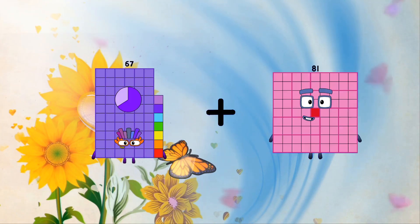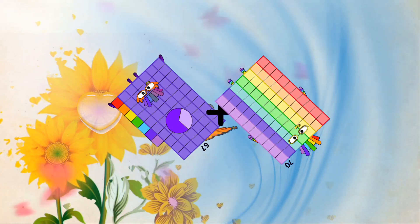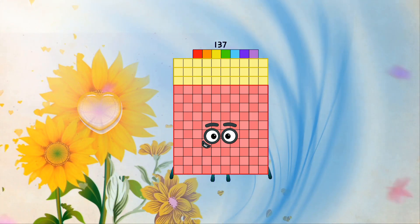Sixty-seven plus seventy equals one hundred thirty-seven.